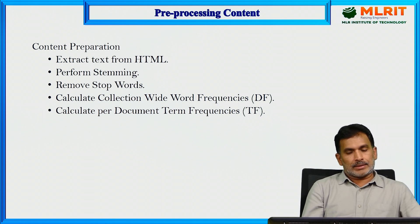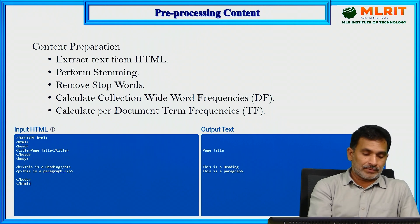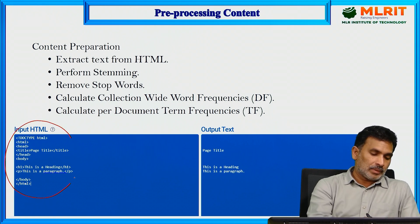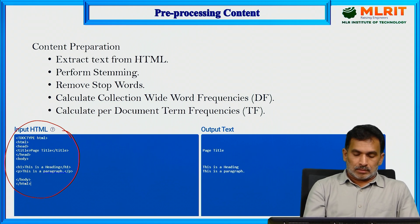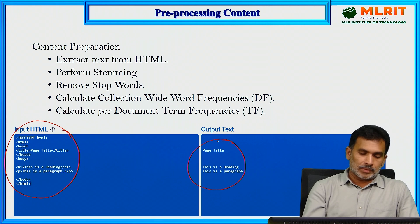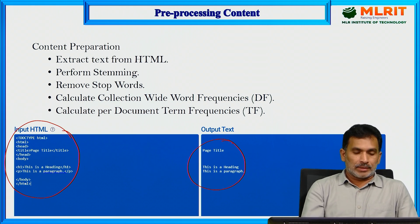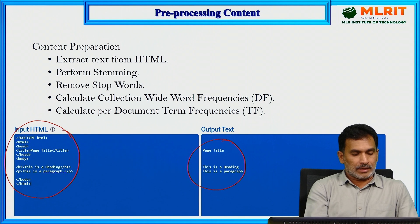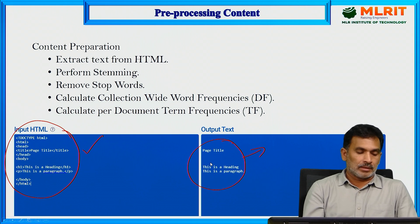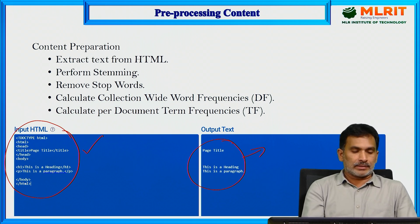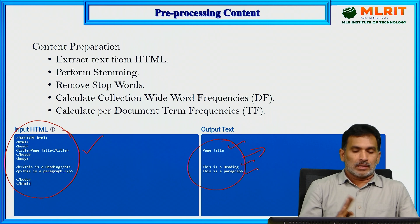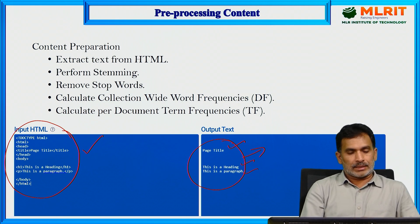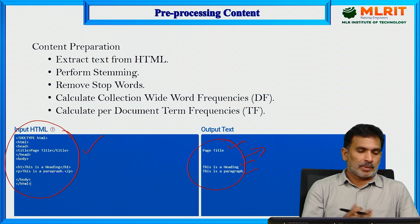We have to extract the text from HTML. On the left-hand side of the image you can see HTML code, and using an online tool to extract text from HTML, I copied and pasted the HTML text and it produced the output as plain text. The tool identifies the page title, headings, paragraphs, and the extracted text. This kind of text extraction from HTML is done as part of content preparation.